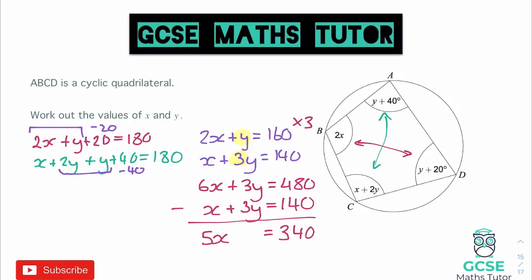So 5x is equal to 340. Well, if we divide that by 5, we'll have our value of x. So 340 divided by 5 is equal to 68. And there is our first answer.